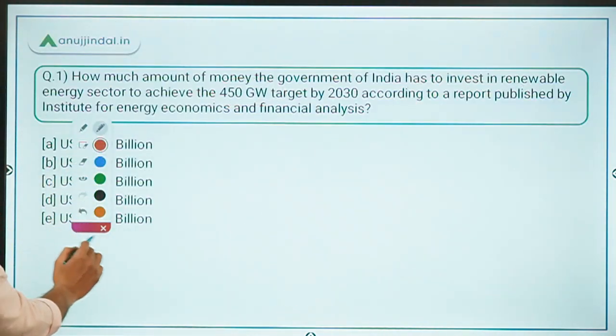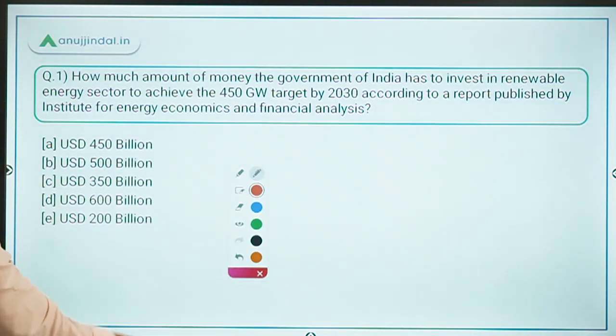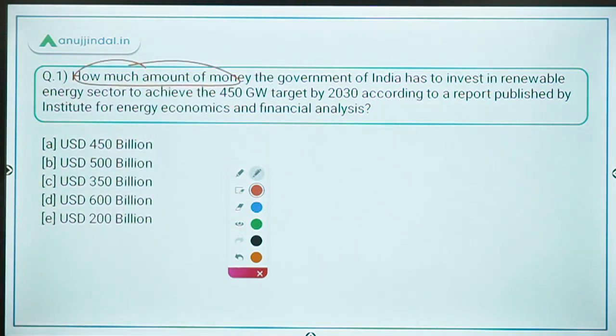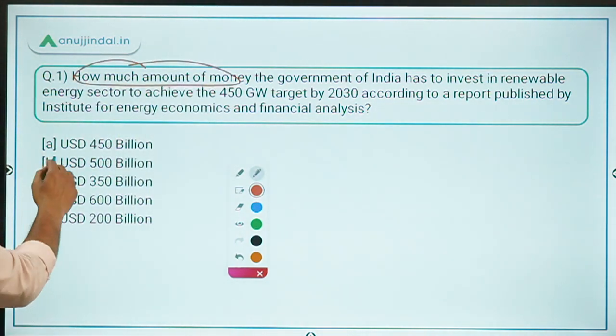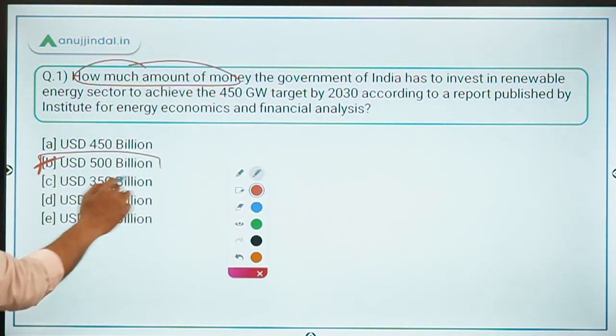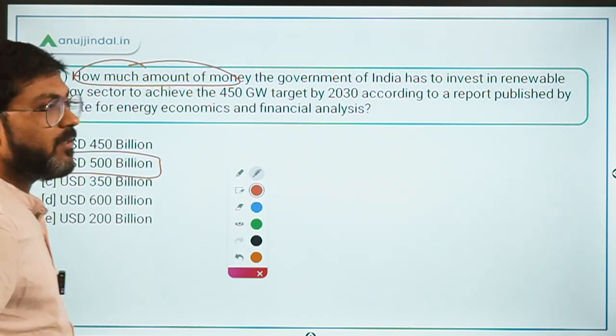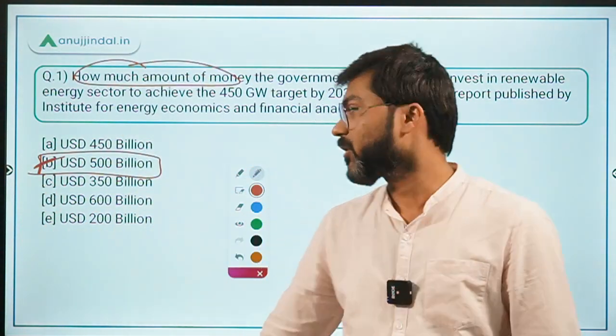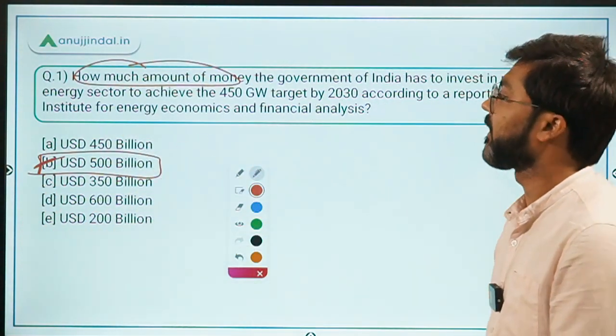So the answer to question one — how much must the Government of India invest — is option B: USD 500 billion. Option B is the correct answer.